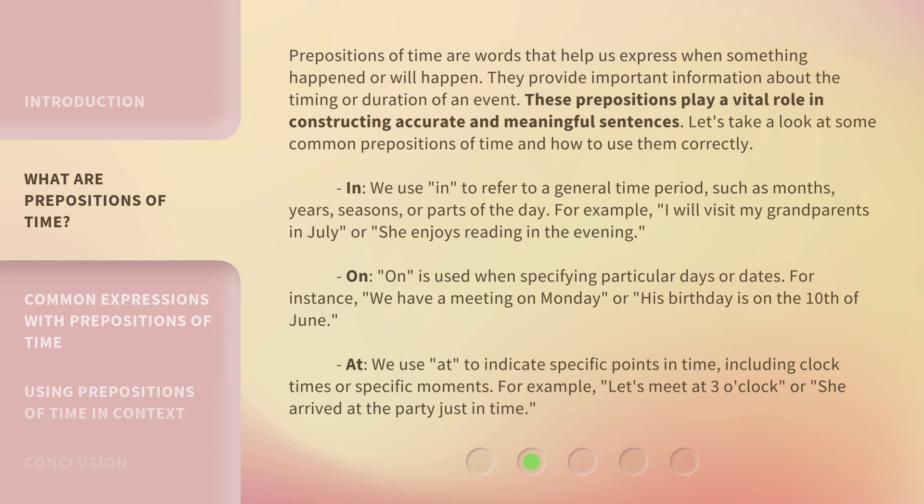Let's take a look at some common prepositions of time and how to use them correctly. "In": we use "in" to refer to a general time period, such as months, years, seasons, or parts of the day. For example, I will visit my grandparents in July, or she enjoys reading in the evening.